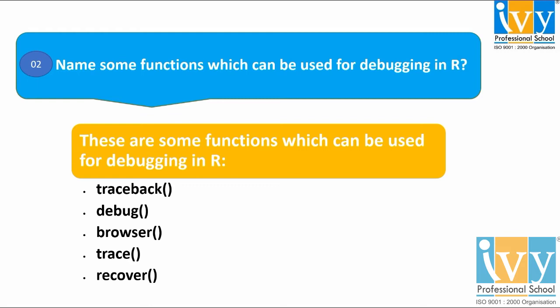The second debugging function is debug, which allows the user to step through the execution of a function line by line. Third is browser, which is inserted into functions to open an R interactive debugger. Fourth is trace, used in a flexible way for debugging. Fifth is recover, which is used as an error handler rather than a direct statement.